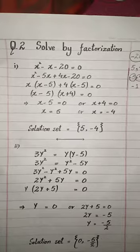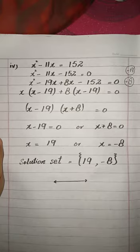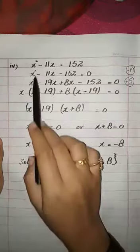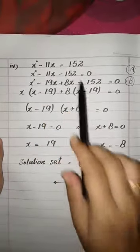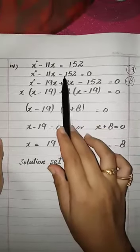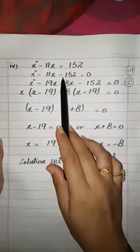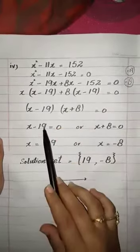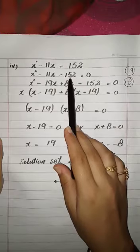Now students, part number 3 and 4 are both the same. I am going to solve part number 4 and you will practice part number 3. Part number 4 is: x² - 11x = 152. Now shift 152 to the other side — here 152 is positive so on the other side it will be negative — giving x² - 11x - 152 = 0.